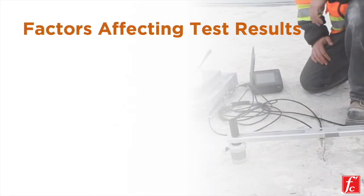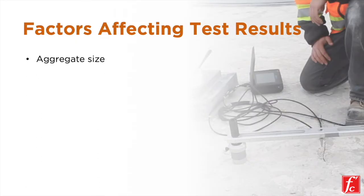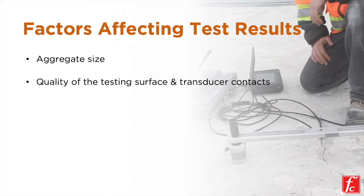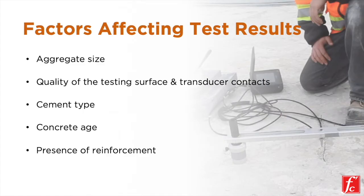Certain parameters can affect the UPV test results, including aggregate size, the quality of test surface and transducer contacts, cement type, concrete age, and presence of reinforcement. Special care should be taken in order to minimize these impacts on test results.